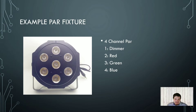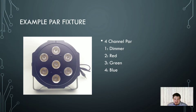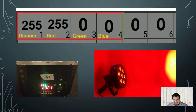Each fixture has a certain number of channels that control what it does. Consult your manual to find out what each channel does. Take note that sometimes there are different modes and you have to set the mode on your fixture to configure that certain functionality. Here's an example LED PAR. It has four channels: a dimmer to control how bright it is, and the amount of red, green, and blue that is sent. You can set the address of your fixture and it will listen to that range.